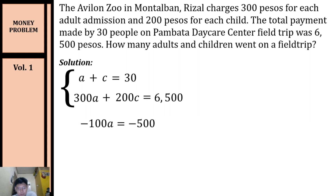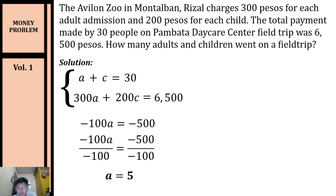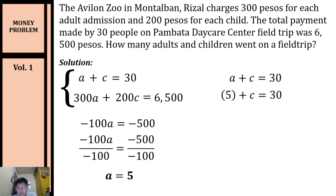Solving for a by dividing both sides by negative 100, a = 5. Now that we have the value of a, we can solve for c by substituting into the first equation. Transposing 5 to the other side: c = 30 minus 5, so c = 25.